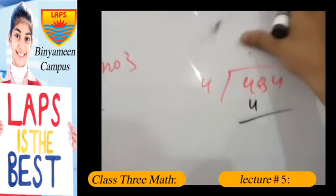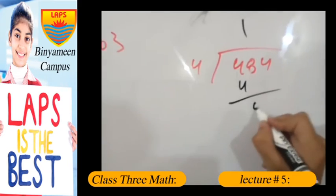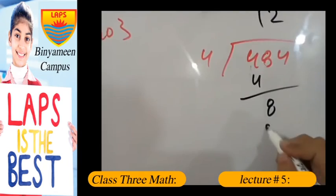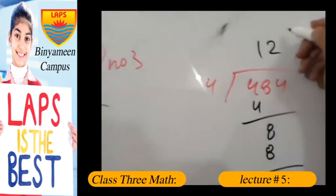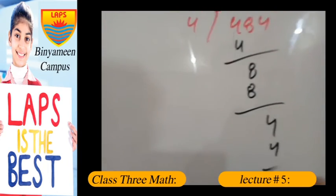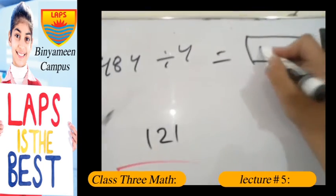4 times 1 is 4, then 8. 4 times 2 is 8. And 4 here again, 4 times 1 is 4. Now the answer will be 121.